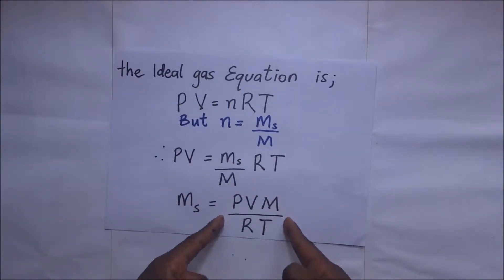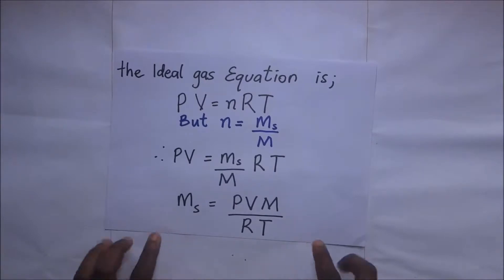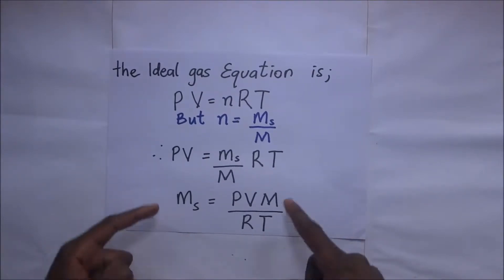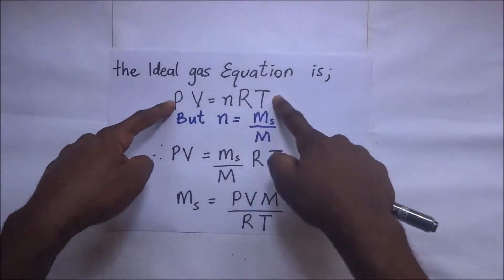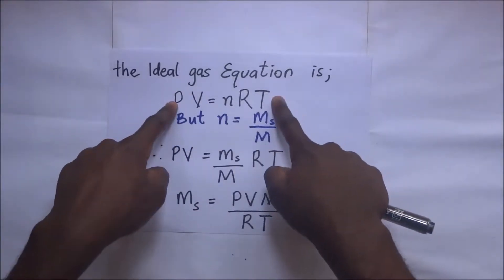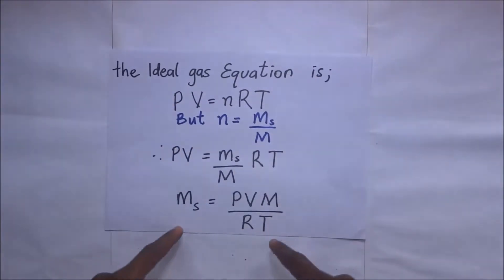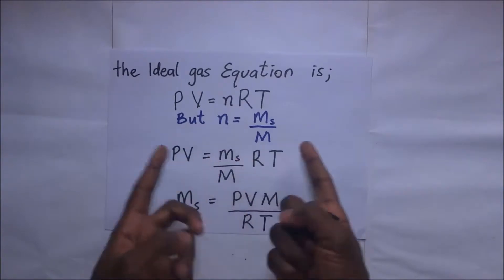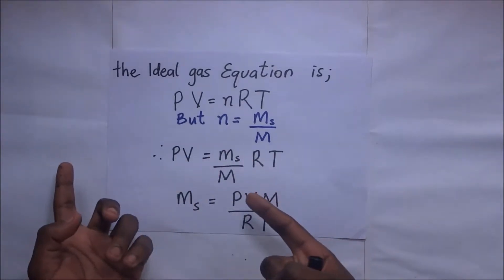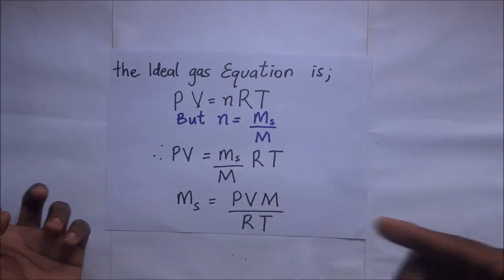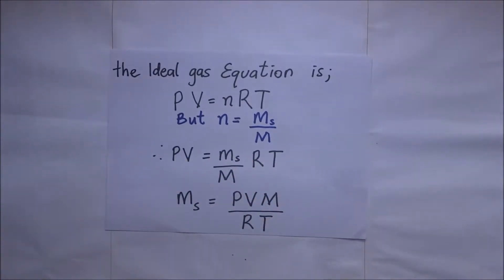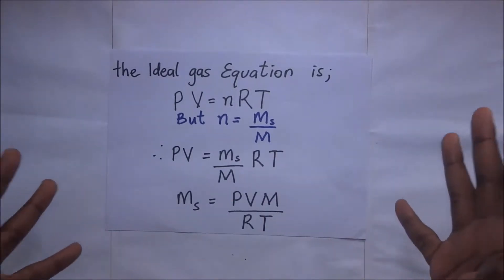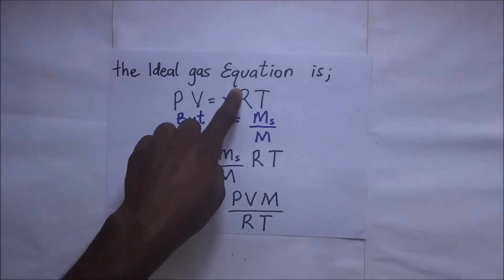This is the expression for the mass of a gas. Just as we've been doing, we're using the ideal gas equation and manipulating it to make what we want the subject of the formula. We're going to use the same approach when dealing with the density of an ideal gas.